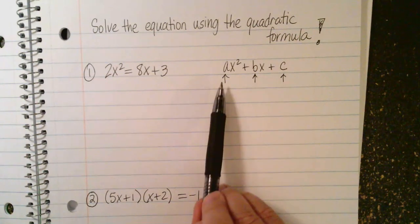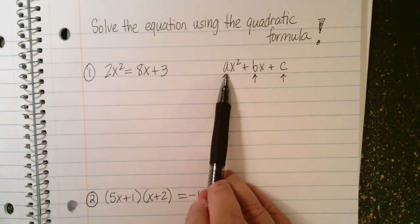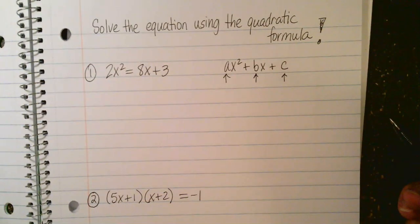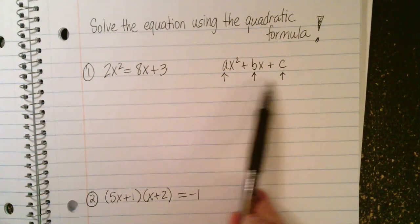Now keep in mind, A is the number in front of x squared. A does not include x squared. B is the number in front of x. It does not include the x. So in order to use the quadratic formula, we have to identify the A, the B, and the C.